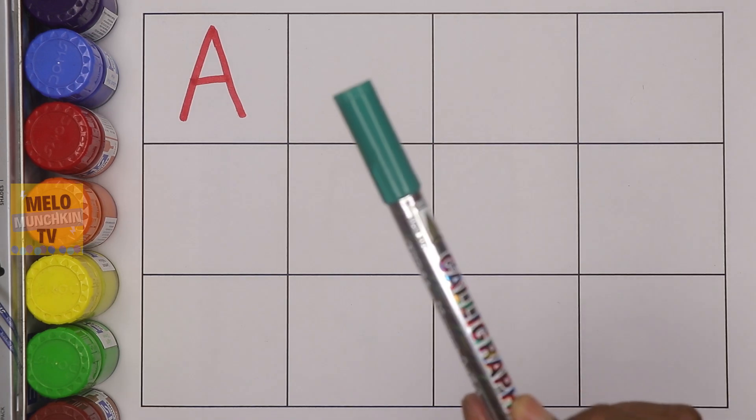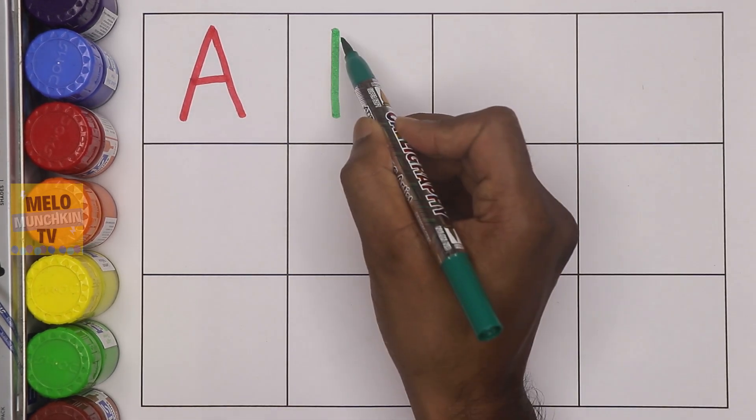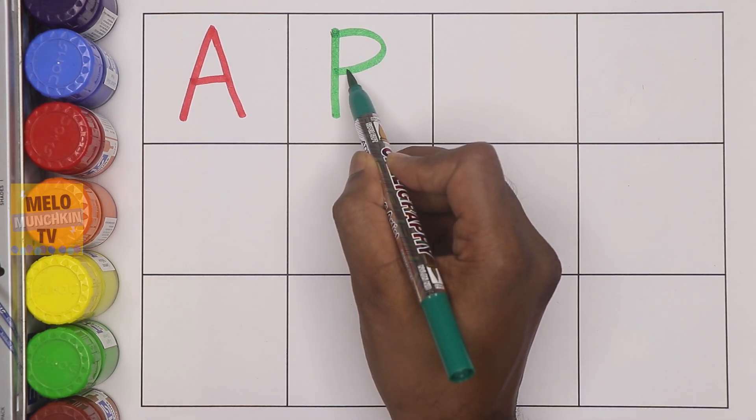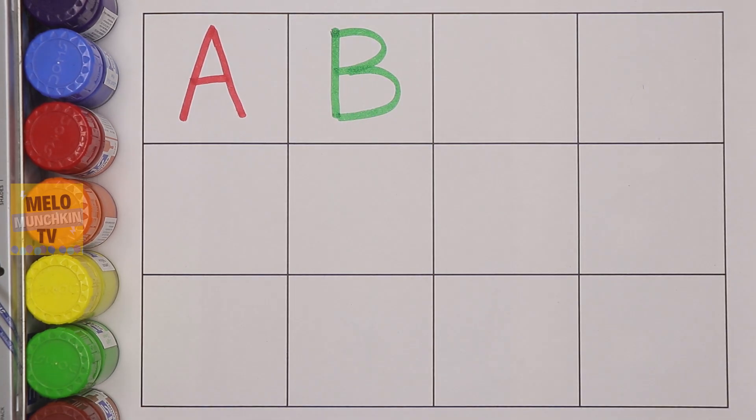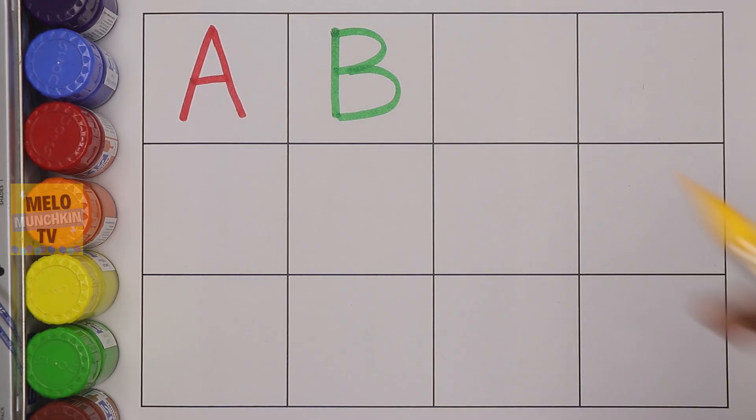Next I'll take dark green color and write the letter B. B for boy, B for boy. Yellow color.